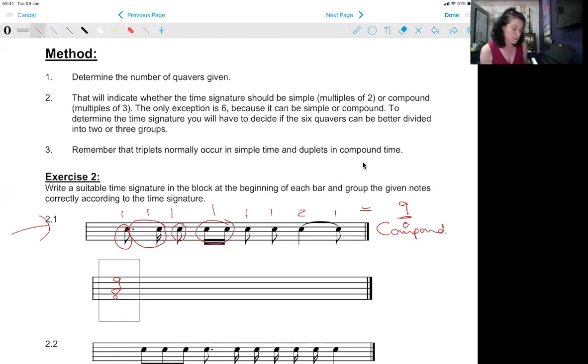Nine quavers because this is compound time will be grouped into three groups of dotted crotchets, and to know where the different groups are we have to make a clean divide between the different groups. A dotted crotchet will be here, here and here. Important here is to remember if we have one group and a 16th note is part of the group, then the tail of the 16th note is always in the direction of the dot of the previous note.